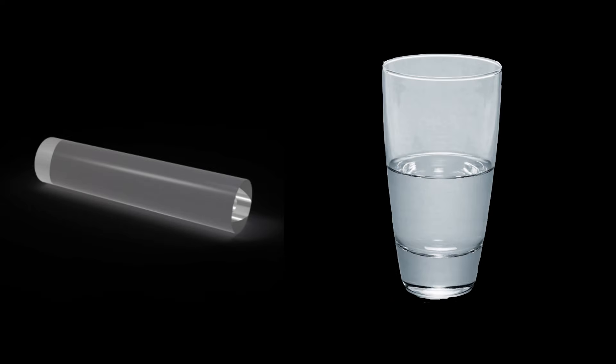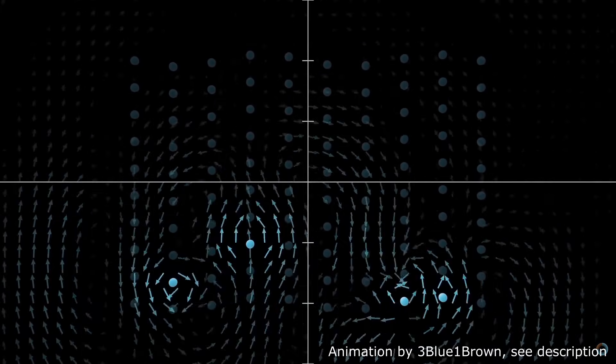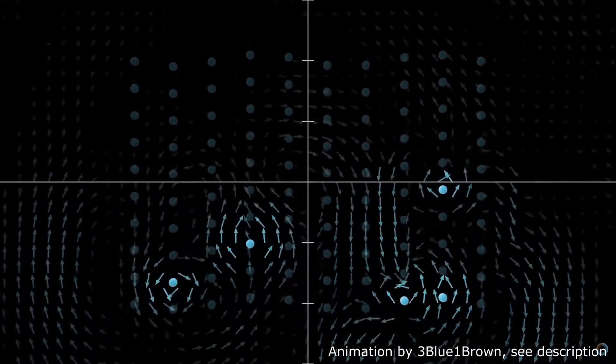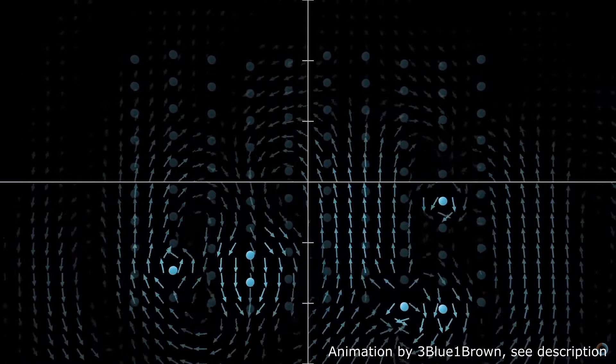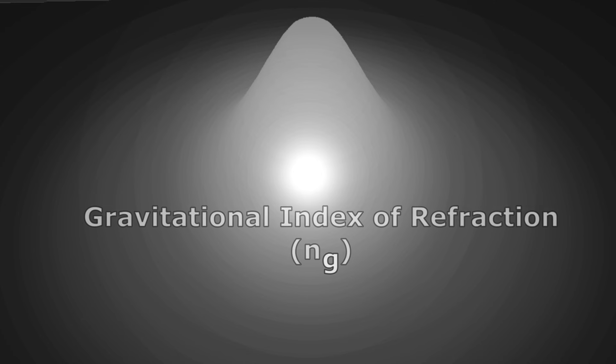Now, refractive index as we know it, in physical materials like glass or water, does of course not directly apply to empty space. For one, because empty space does not contain the charged particles like electrons and ions that are required to effectively slow down electromagnetic radiation. So when referring to a refractive index of space, I'm assigning some hypothetical property to space that has the same net effect on the propagation of light. And to indicate that I'm talking about something that is fundamentally different from the standard refractive index, I will refer to this property as the gravitational index of refraction.